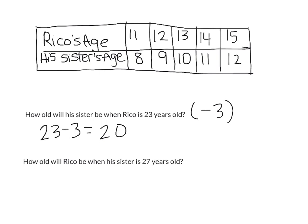The second question is how old will Rico be when his sister is 27 years old? Now when we are going in the opposite direction, if we start with his sister's age and need to figure out what Rico's age is, we are going to add 3 to his sister's age. So if his sister is 27 years old, we are going to add 3 and figure out that Rico will be 30 years old at that point.